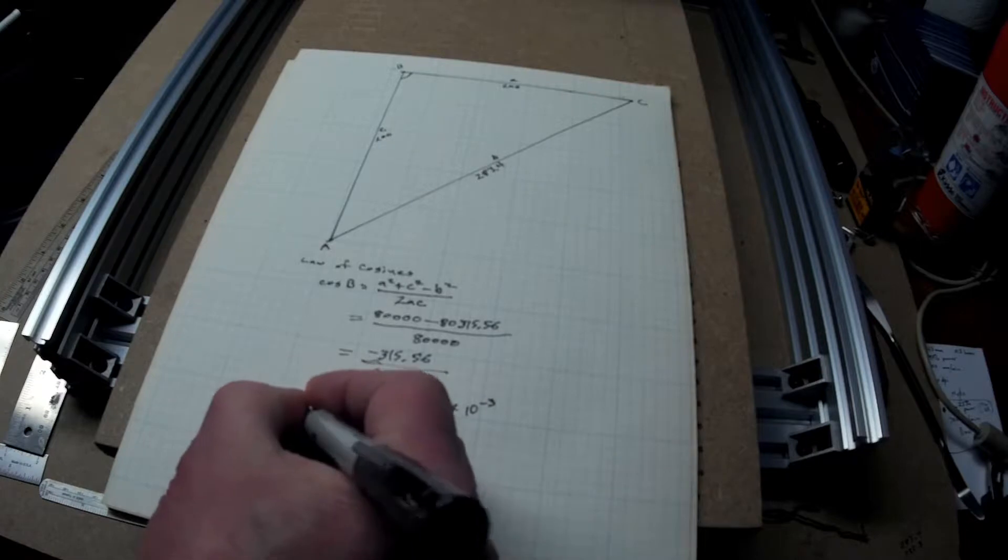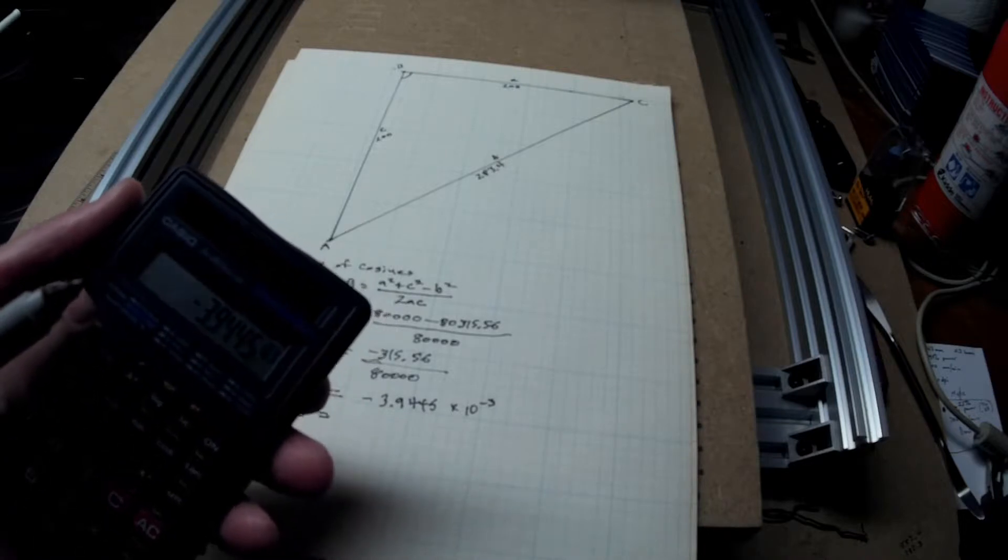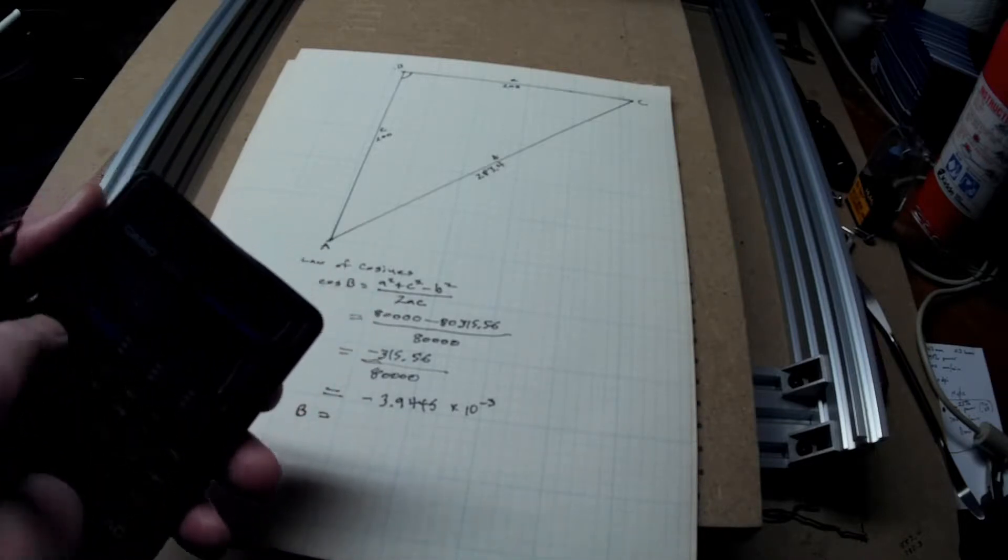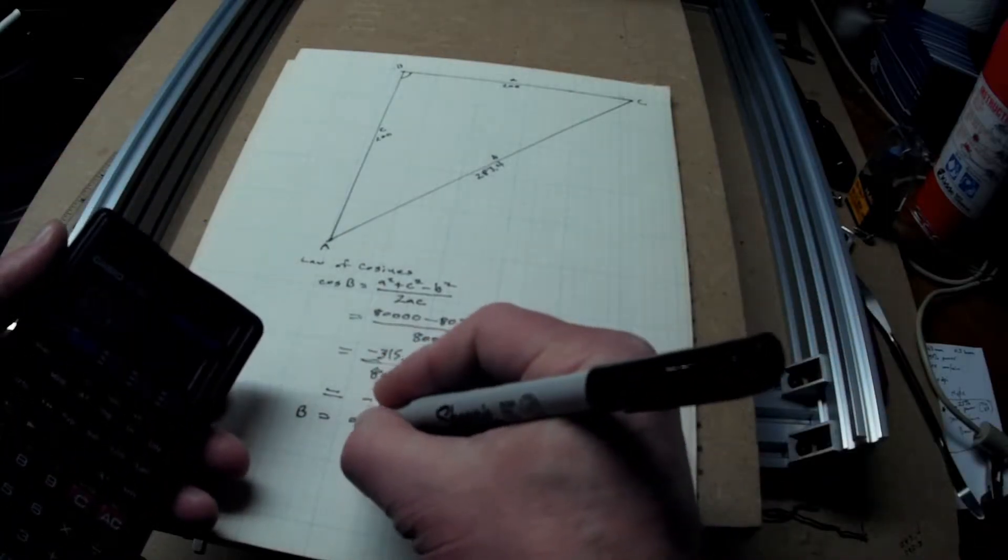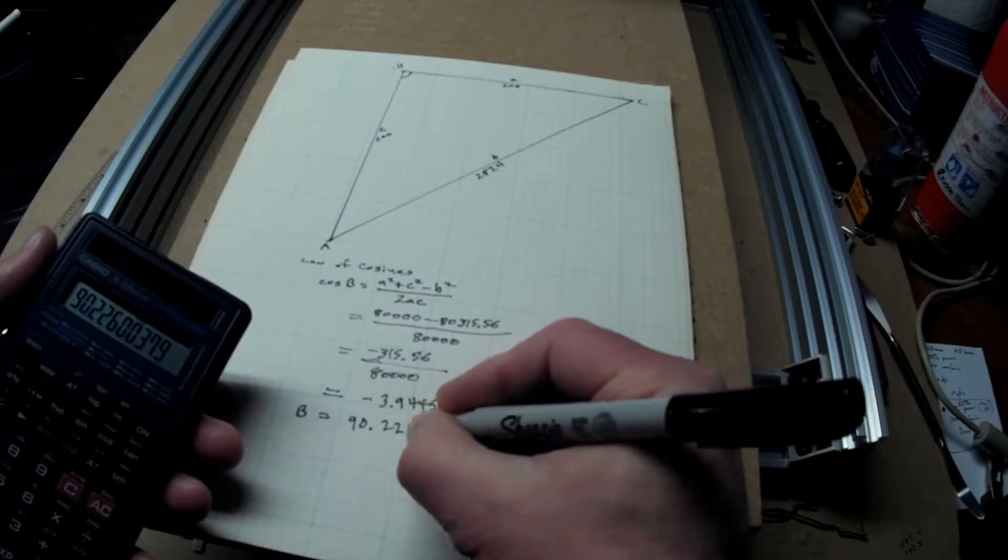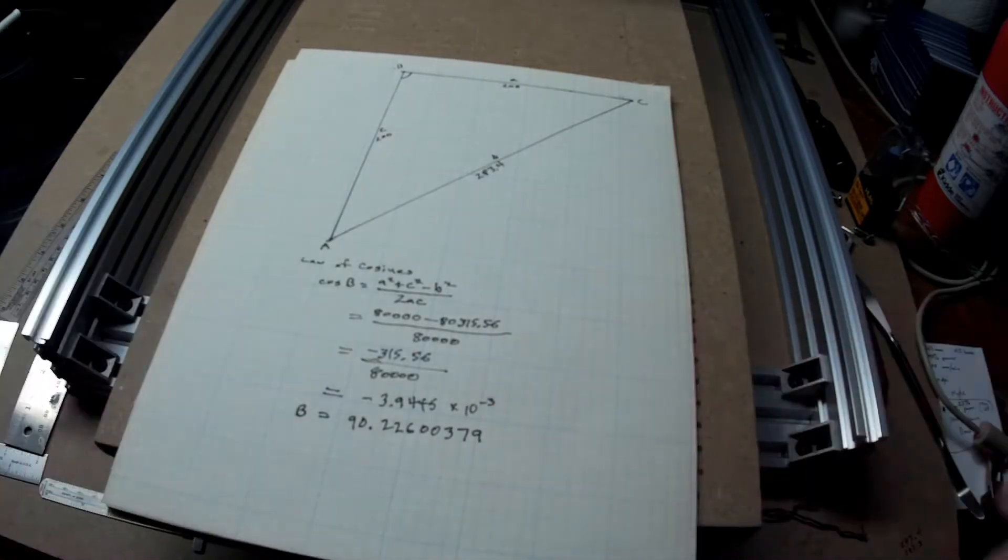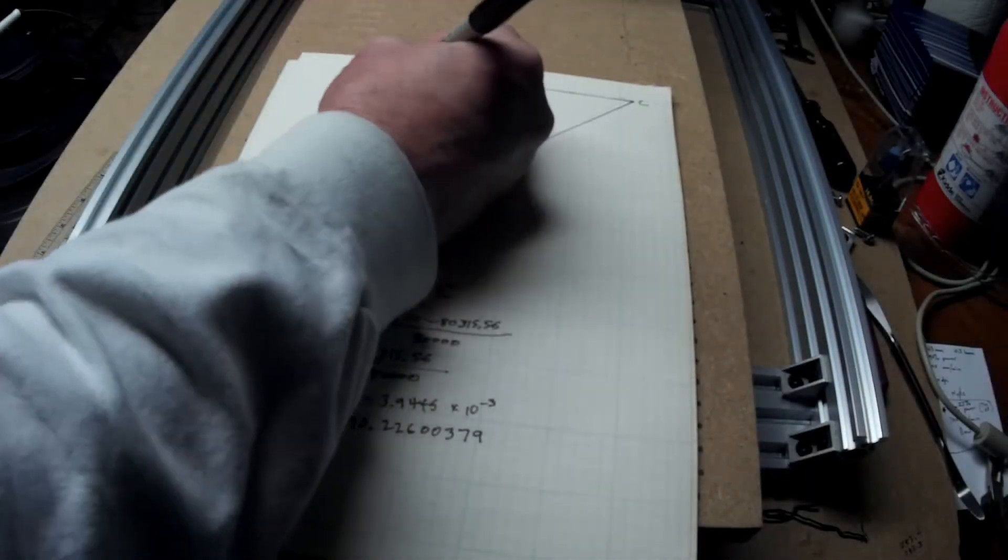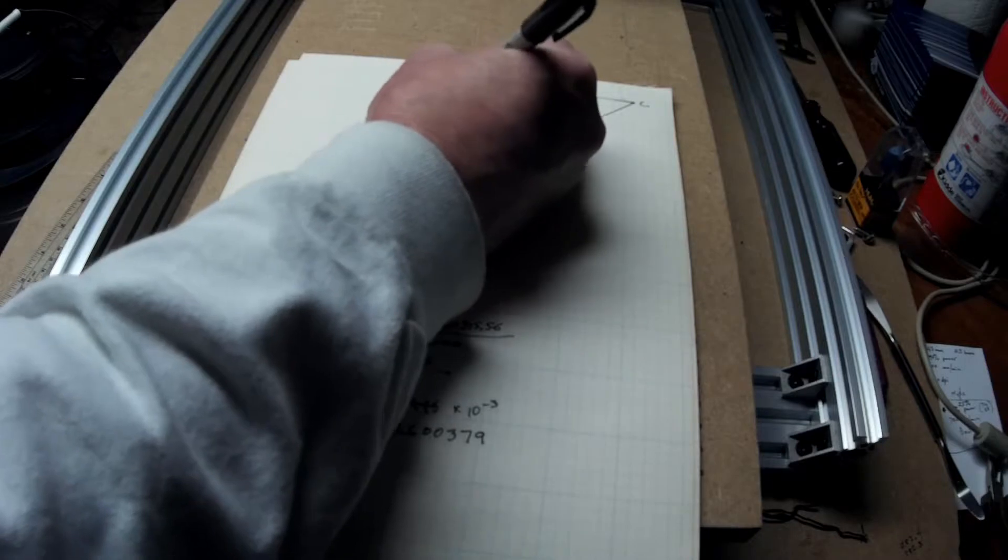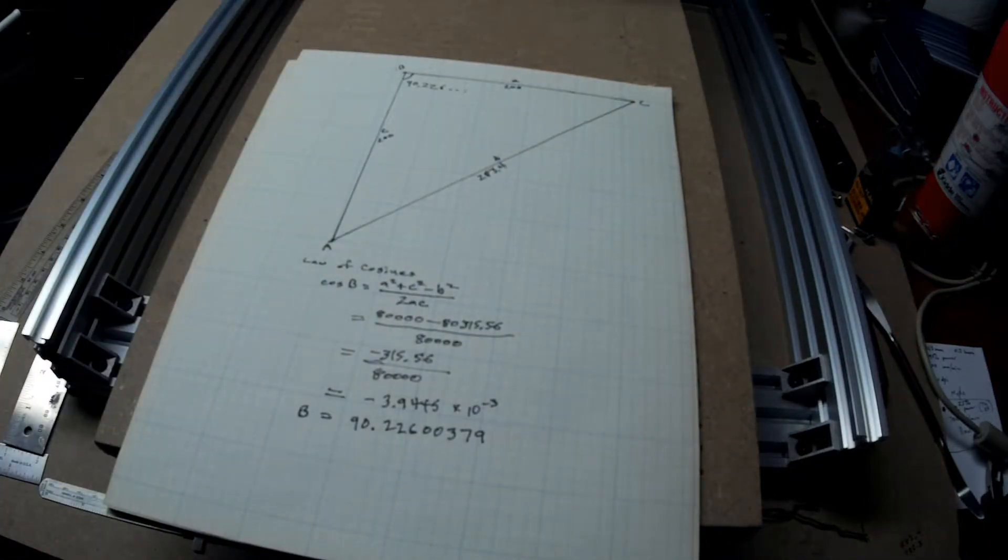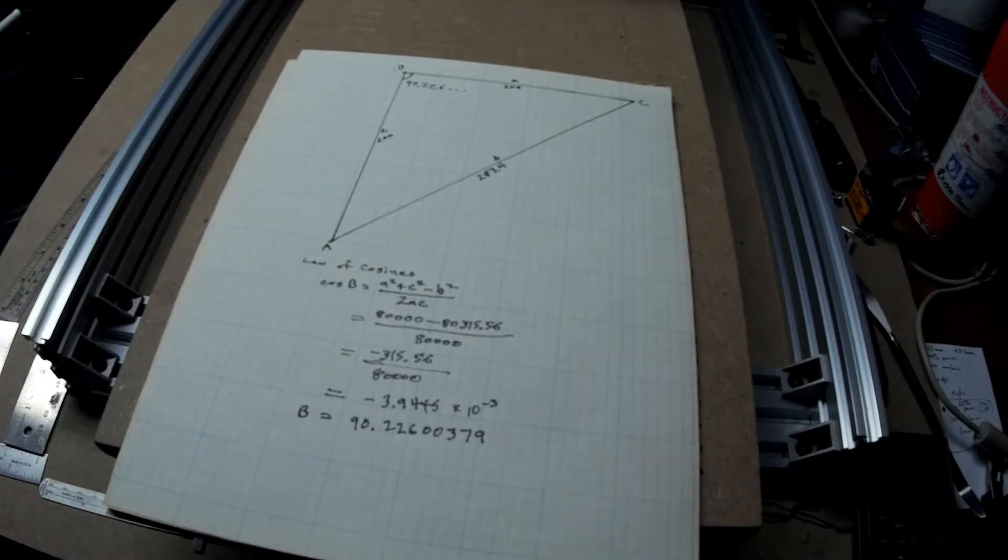So, B, then, is equal the arc cosine. And, on your calculator, you usually get that by hitting the shift key and the cosine button. So, shift, cosine, that's arc cosine. So, that gives me 90.22600379 degrees. So, that's what this angle is. 90.226 and some. So, this angle is too big by .226 degrees.